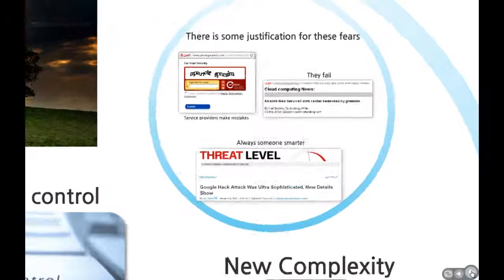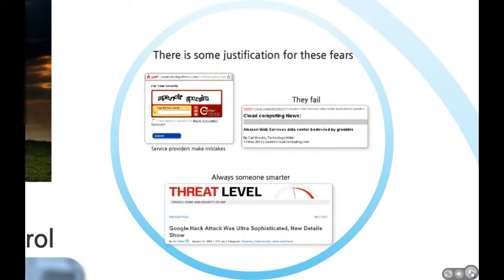And these fears are not solely irrational — there's some justification. Providers like Salesforce botched security credentials and other security checks. Amazon has certainly had its share of outages and problems. And even if you're really smart, like Google, there's always someone smarter, like China.